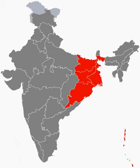The East Zone Cricket Team is a first-class cricket team that represents Eastern India in the Duleep Trophy and Deodhar Trophy. It is a composite team of five first-class Indian teams from Eastern India competing in the Ranji Trophy, containing notably Bengal, Jharkhand, and Odisha.